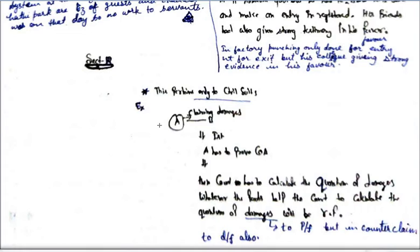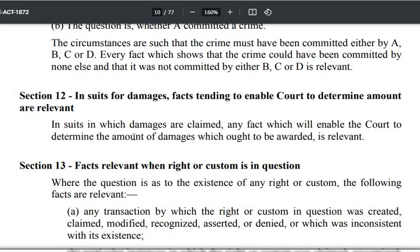Suppose A has filed a suit against B and is claiming damages. How much damages will be awarded to A? That has to be calculated. In the trial, A will prove his cause of action and the relevant facts will be there. But once the court has decided, decreeing the suit in his favor, the court has to calculate the quantum of damages. Whatever fact will help the court in determining the quantum of damages will be relevant.